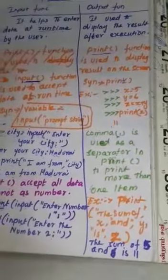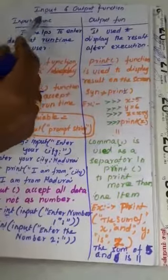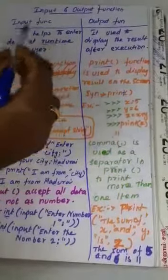Hello students, now we are going to study 12th standard computer science, chapter 5, topic: input and output function. First one, input function.